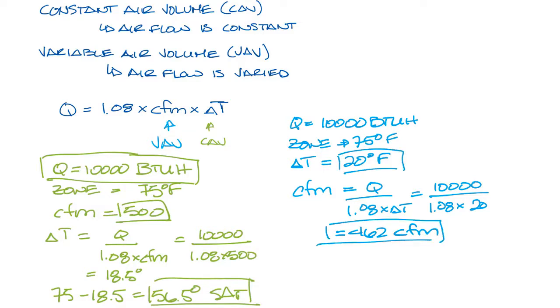Now let's say the load in the zone goes up to 12,000 BTU. In our variable air volume system, we would increase the CFM. In our constant air volume system, we would decrease the supply air temperature.